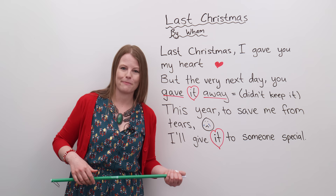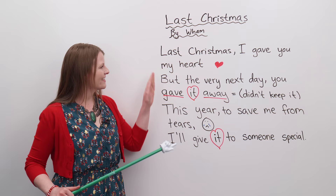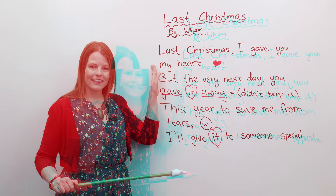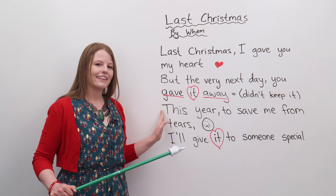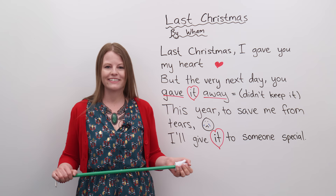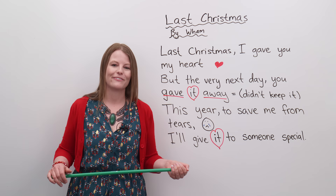This song is about a man who had bad luck with love at Christmas. But this year he's hopeful — he thinks he can find somebody new and give his heart to someone special. Let's sing: Last Christmas, I gave you my heart. But the very next day, you gave it away. This year, to save me from tears, I'll give it to someone special. Feel free to watch the actual Wham! music video if I'm a little too off-key.